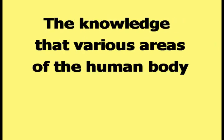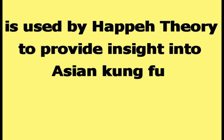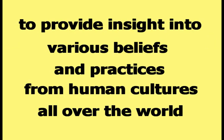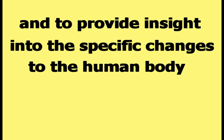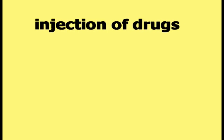The knowledge that various areas of the human body can behave as if they are constructed from elliptical shapes is used by happy theory to provide insight into Asian Kung Fu, into various beliefs and practices from human cultures all over the world, and into the specific changes to the human body that can be caused by masturbation, excessive sex, excessive exercise, snorting of drugs, injection of drugs, and anorexia.